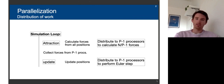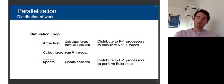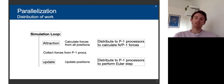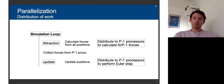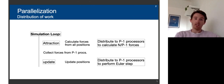If we have processor zero for coordination, then we can take the remaining P-1 processors, and each processor gets N divided by P-1 of the objects, where N is the number of objects — all the planets, the sun, and all the asteroids. We distribute the work, calculate the attraction, collect it all again in the simulation loop, and then use that to update the steps.